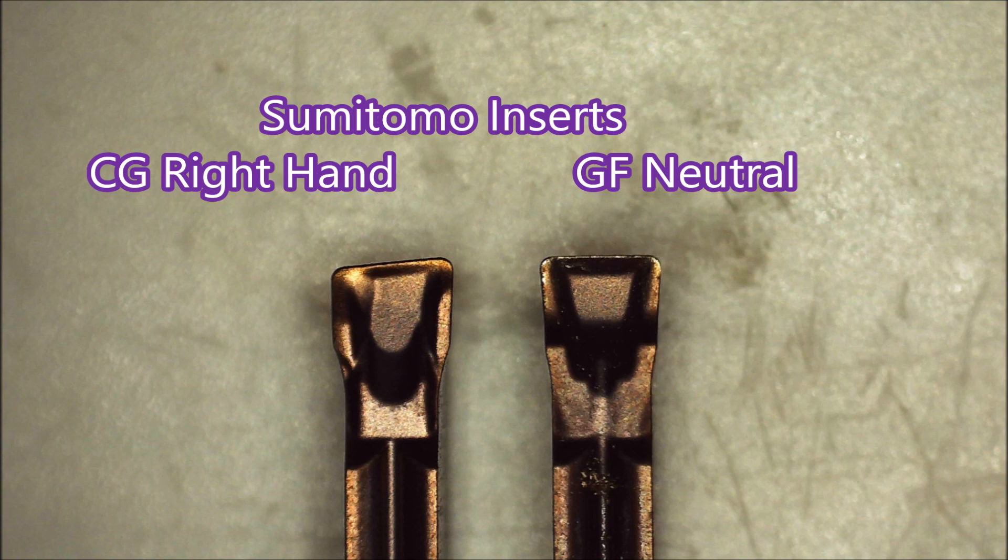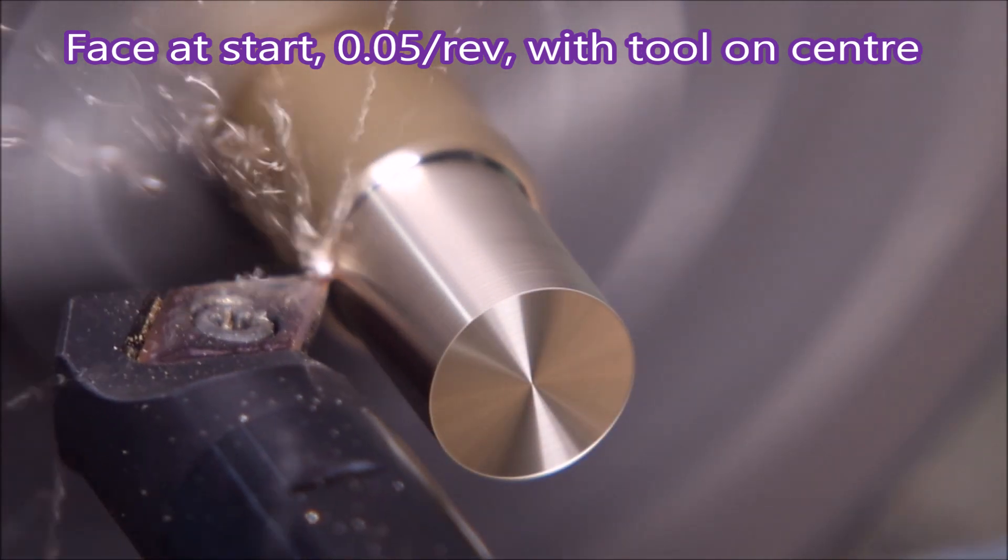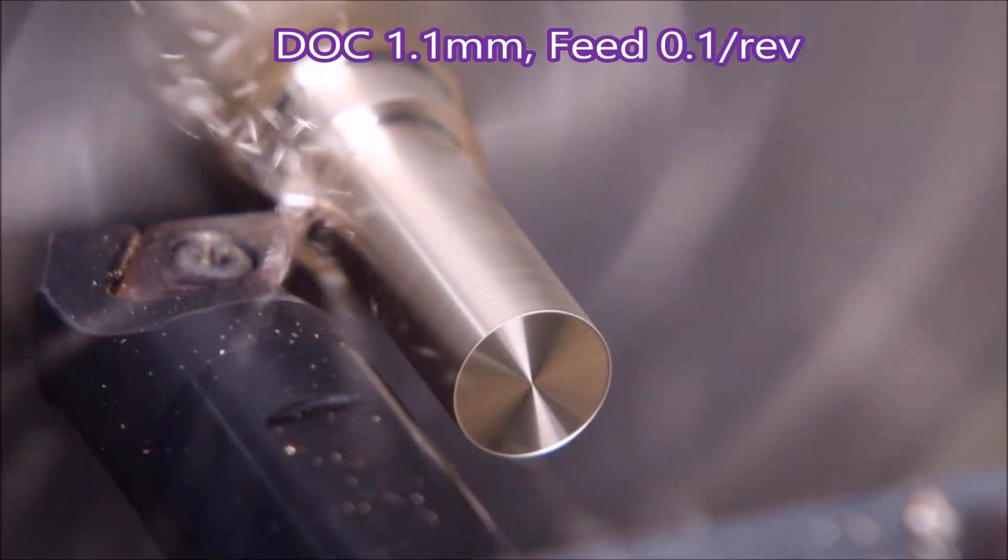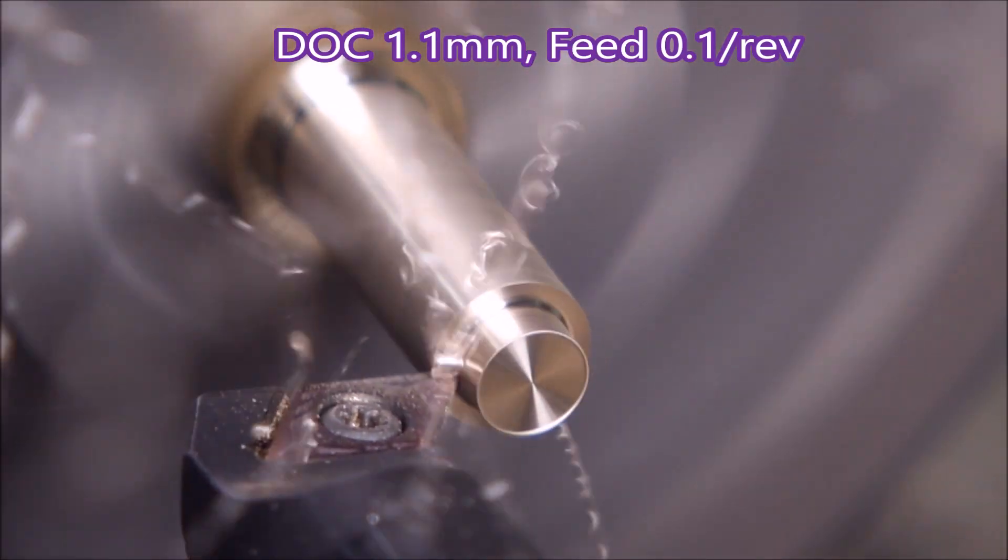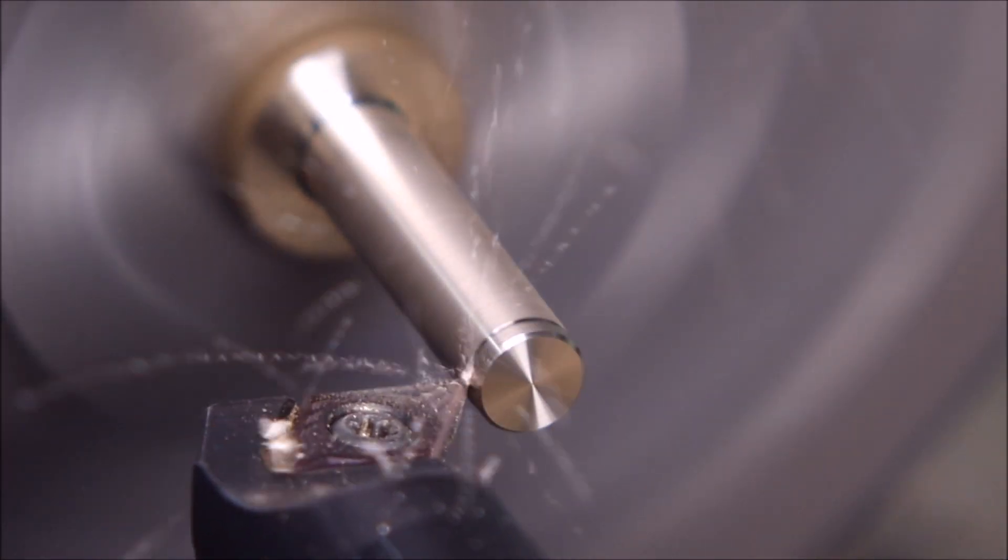There you can see the difference between a right-hand insert and a neutral insert. There's the two inserts for you. The slope on the right-hand one. Right, facing off to start with, three cuts of roughing, and then we get down to doing the contour cut.